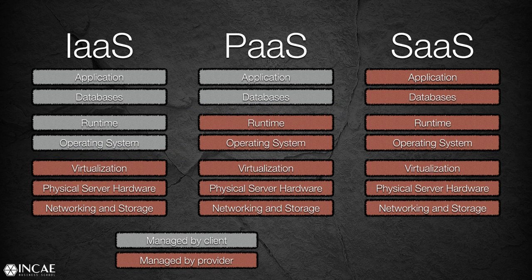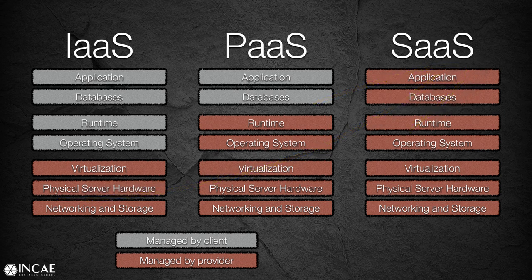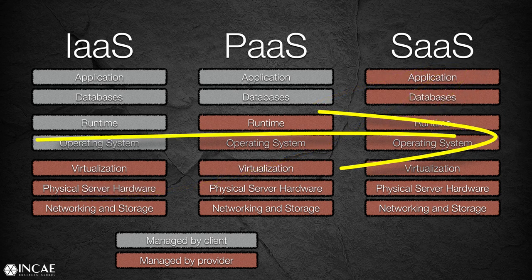Given these three service delivery models, we can find some economic relationships between them. As we move from infrastructure towards platform and finally to software as a service, the provider is doing much more for us — we care much less about what's going on underneath. The provider is adding much more value to us. As we move from left to right, the value added by the service provider is greater, and correspondingly the prices that the provider will charge are greater.